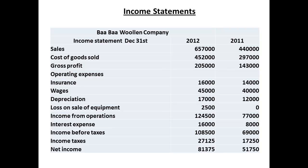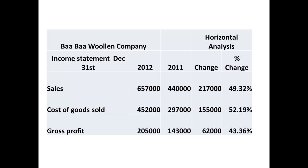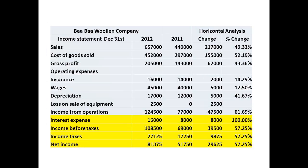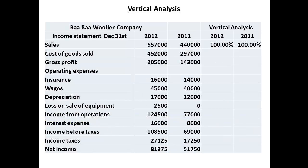Next, we turn to the income statements for the two years, starting with horizontal analysis. We look at gross profit. Sales have increased by almost 50% and gross profit has increased by a similar percentage. The increase in sales looks healthy. There has also been an increase in income from operations and no significant increase in overall expenses. Net income has also increased. Vertical analysis of the income statements shows that gross profit as a percentage of sales has actually shown a very small decrease, only of the order of around 1%, from 32.5% to 31.2%.